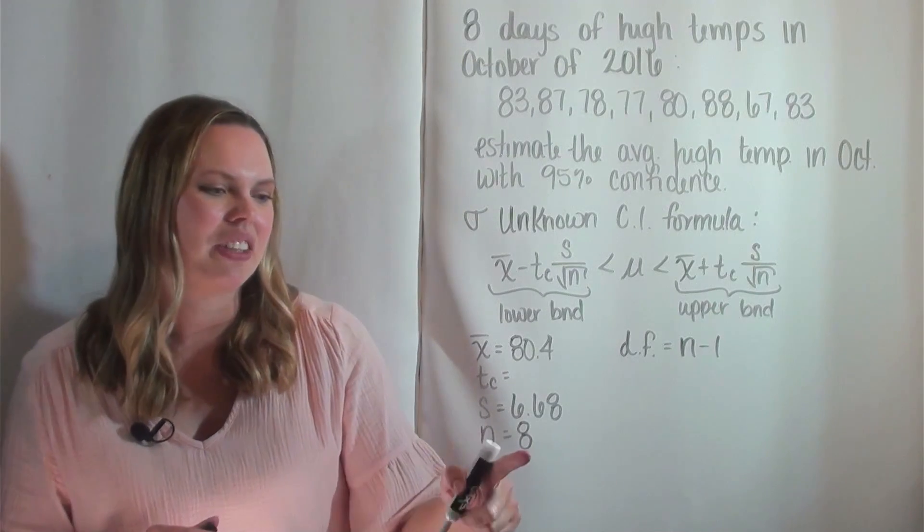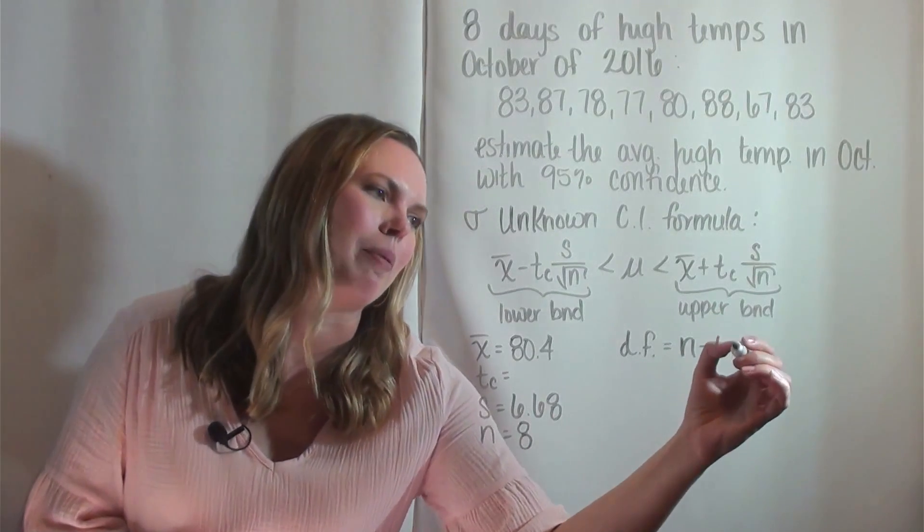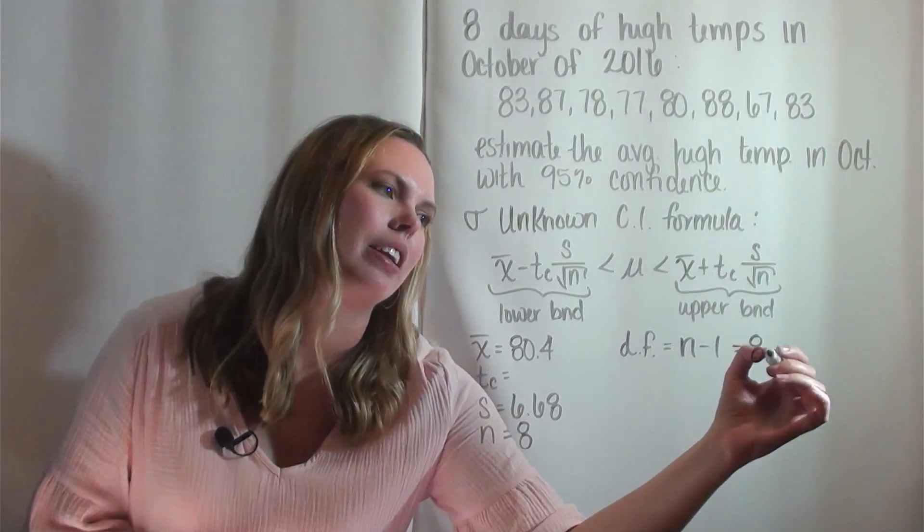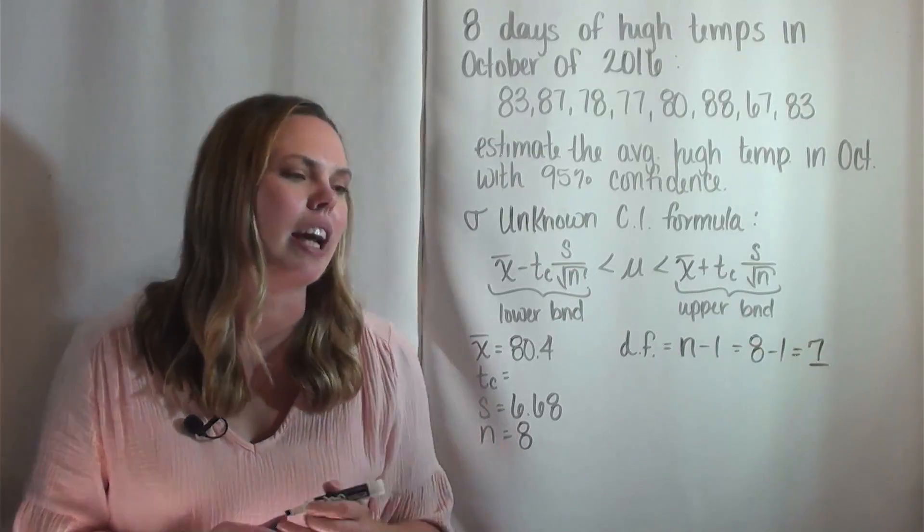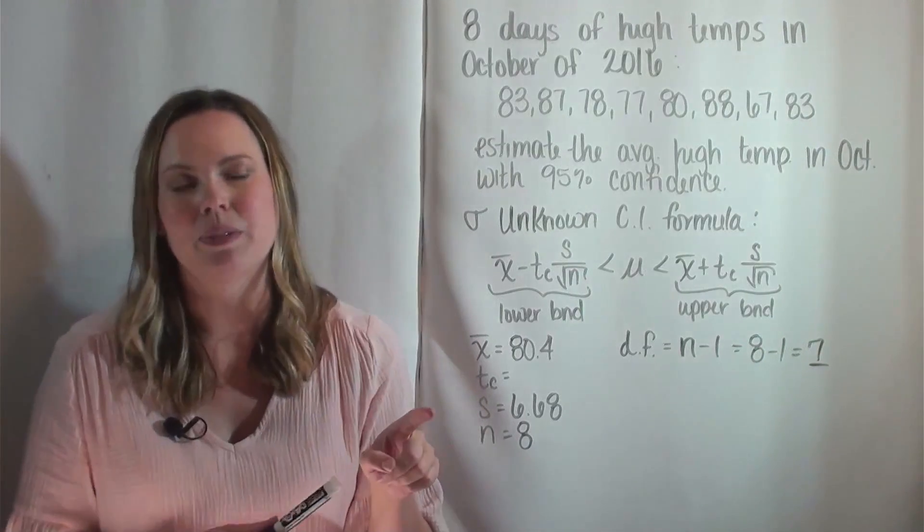So we find our degrees of freedom and it's going to be eight minus one, which is seven, and that's just used to find our T sub C.